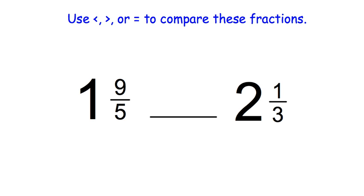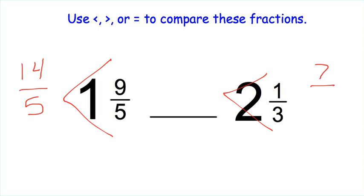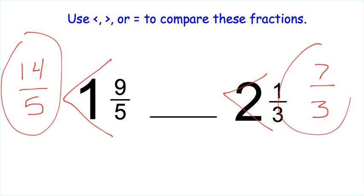Now for this example, we're comparing two mixed numbers. So we're going to need to do that triangle trick twice. So we're going to do 5 times 1 plus 9. So we get 14 fifths. Denominator stays the same. Triangle trick again. 3 times 2 is 6 plus 1 is 7. Denominator stays the same. So we're comparing 14 fifths and 7 thirds.